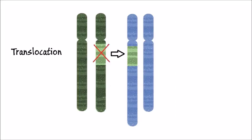This is an example of translocation. The light green area represents genetic material that is cut out from one chromosome and attached to another chromosome.